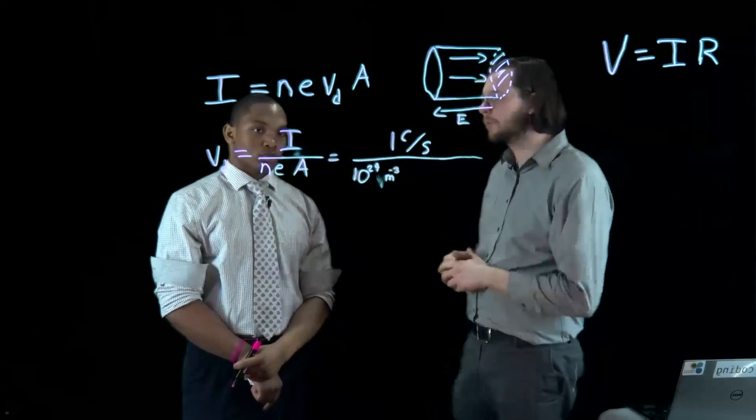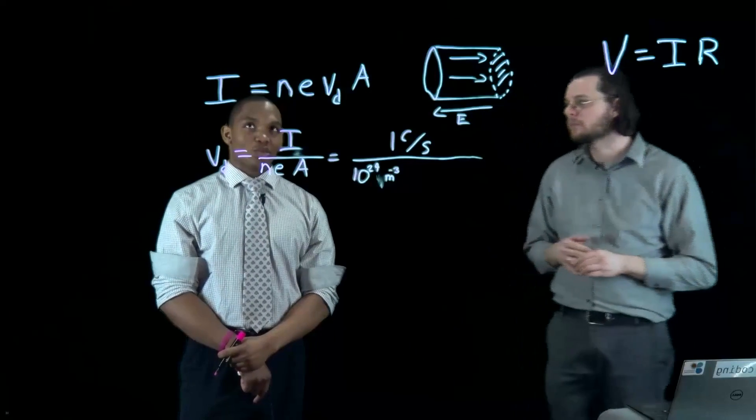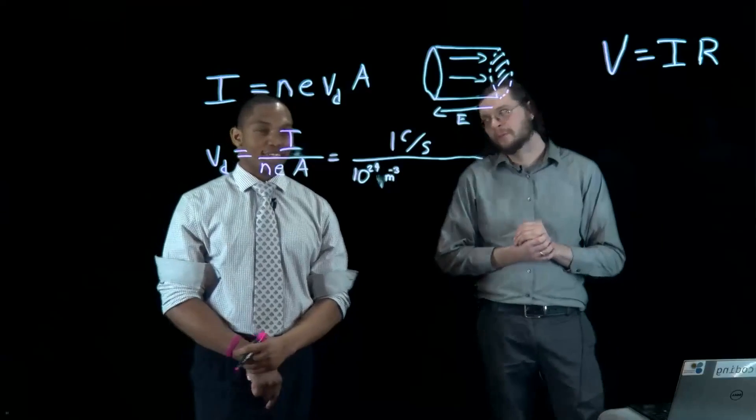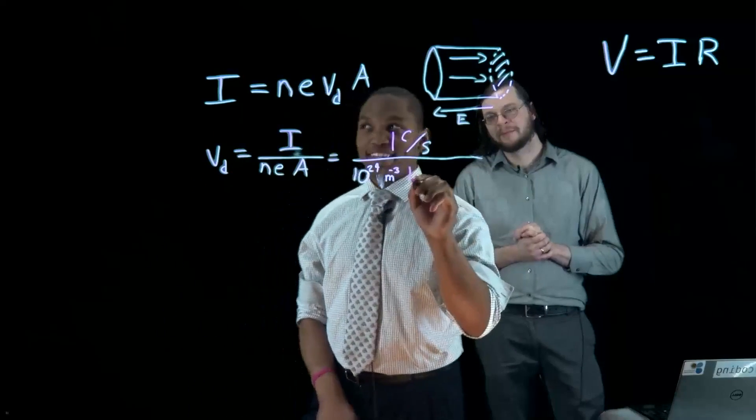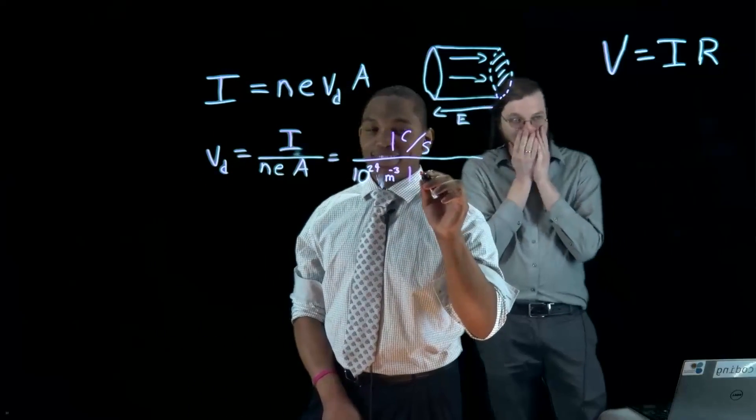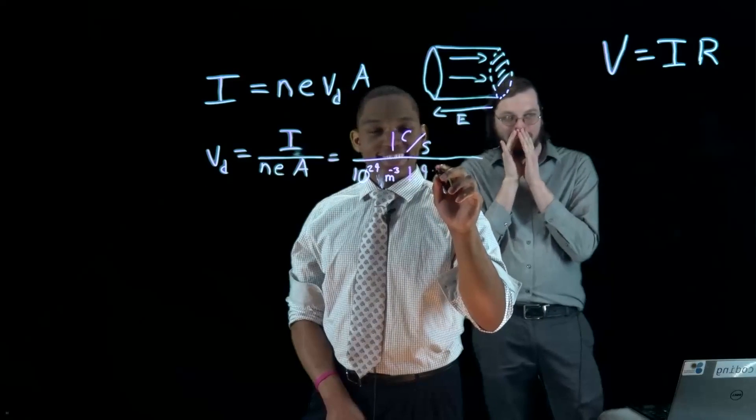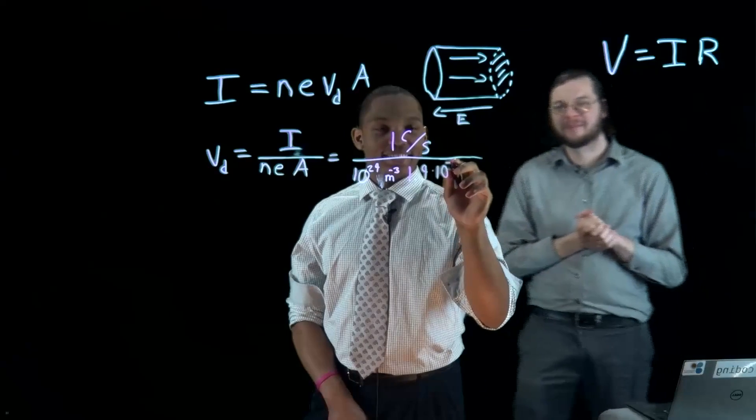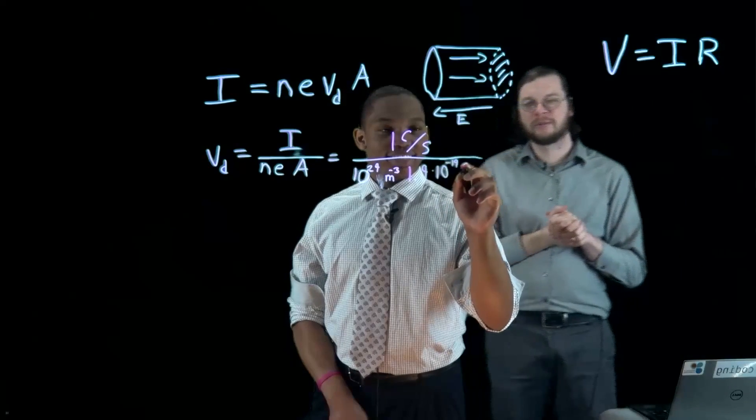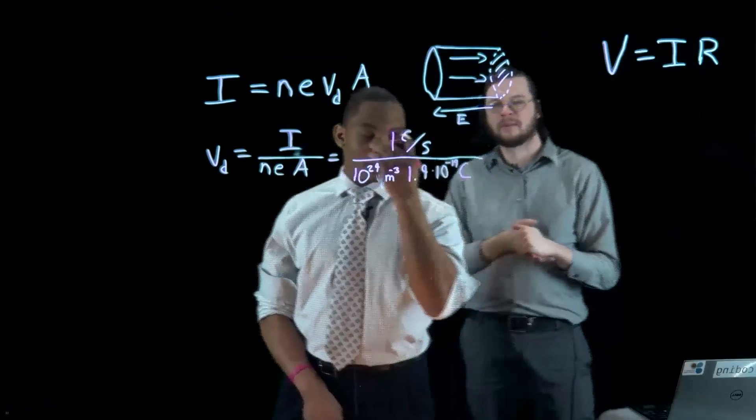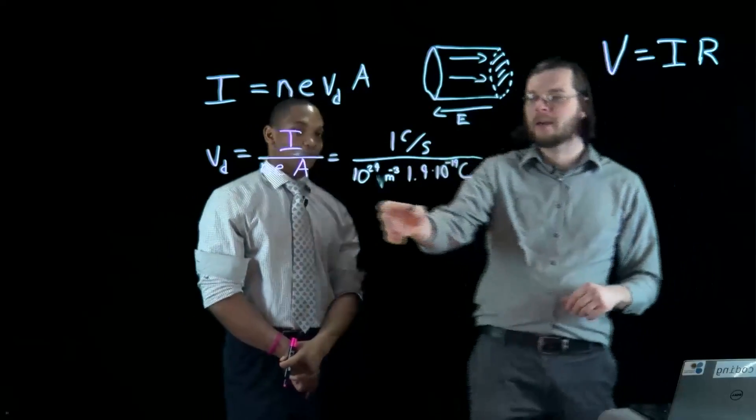Do you remember the charge of the electron? It's 1.9 times 10. Don't tell me, don't tell me, don't tell me. It is, is it 10 to the 19? 19? Yeah. Minus 19. Yeah, negative 19. There you go. And that's, what units is that? Charge? That's, yeah, that's the Coulomb. Yeah.